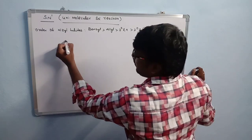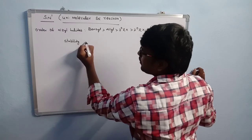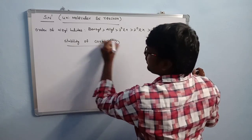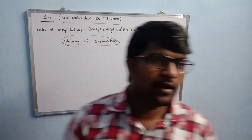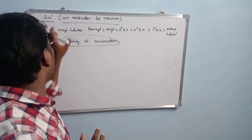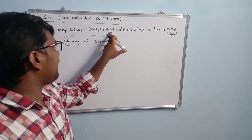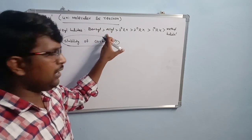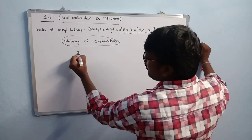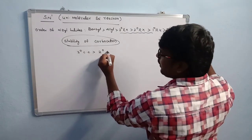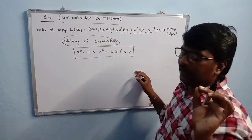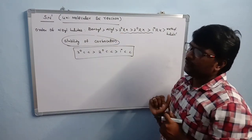The reactivity order is based on carbocation stability. Benzyl and allyl carbocations are stabilized by resonance, giving them greater reactivity. For tertiary, secondary, and primary carbocations: tertiary carbocation is more stable than secondary, which is more stable than primary. That's why tertiary carbocation is most reactive in SN1 reactions.